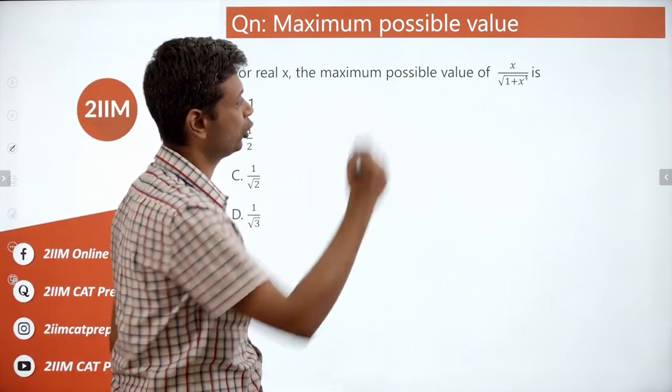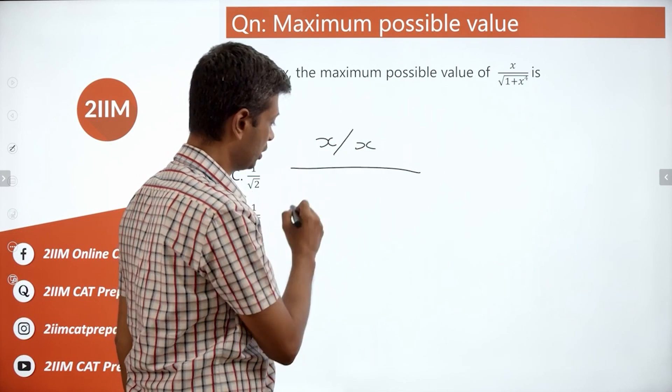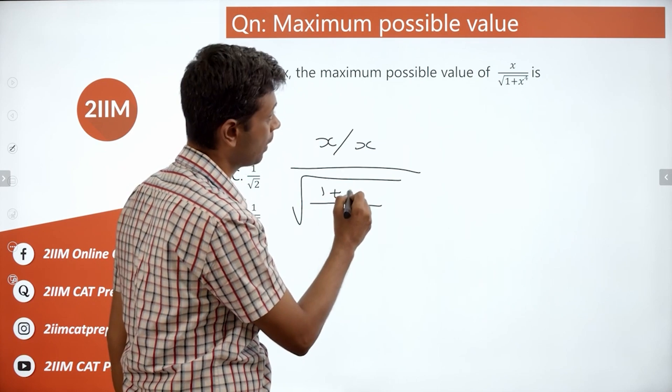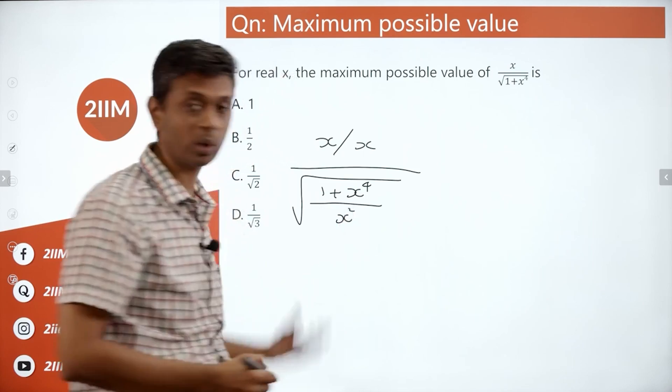Divide by x in the numerator and denominator. So, numerator is x by x. Denominator is 1 plus x power 4 by x square because inside the square root.